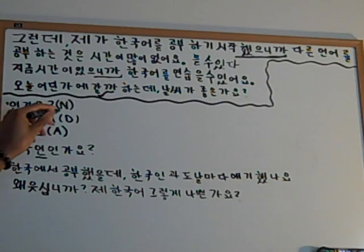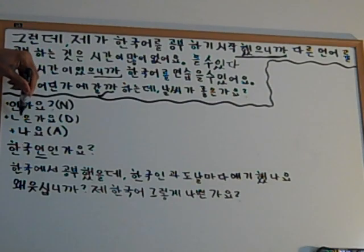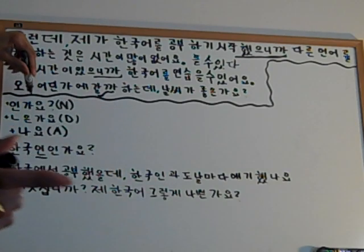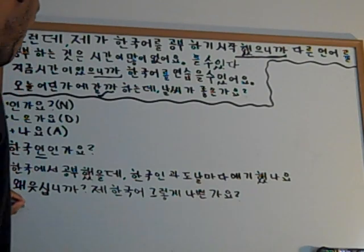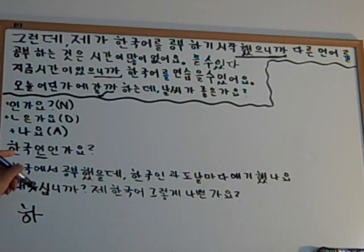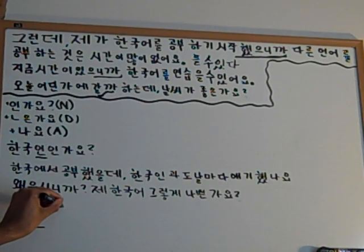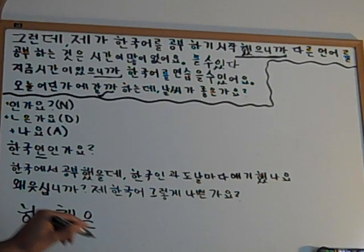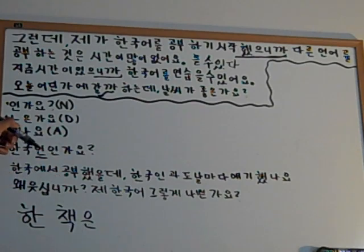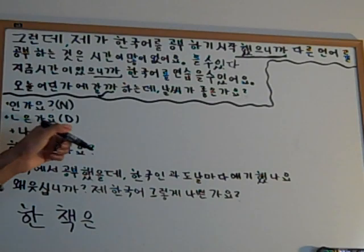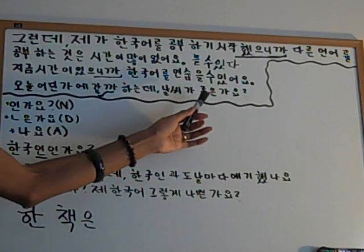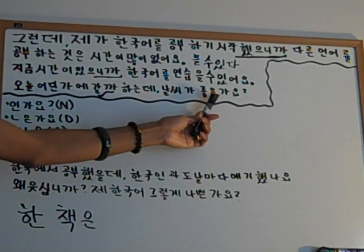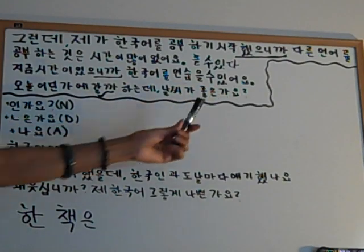The second form is 은가요 or 는가요. If the word ends with a vowel you use one form; if it ends with a consonant you add 은. This is a descriptive form — like an adjective. So 좋은가요 — 좋 ends with a consonant, so we use 은가요: 'Is it good? Is the weather good?' It's describing something. That's the descriptive question construction.